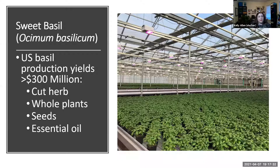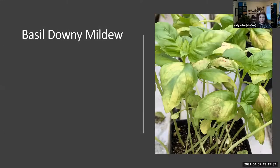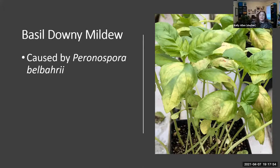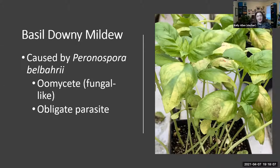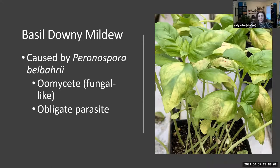Unfortunately, in about 2007, basil downy mildew entered the US. It was first reported in Florida and has rapidly spread to nearly every US state since then. Since basil downy mildew became an emerging disease threatening basil, significant advances have been made to understand the biology of infection. It was identified to be caused by the pathogen Peronospora belbahrii, which is an oomycete or fungal-like organism. It's an obligate parasite, meaning it requires living plant tissue in order to colonize and reproduce on. Unfortunately, it can cause multiple infections in a single growing season.